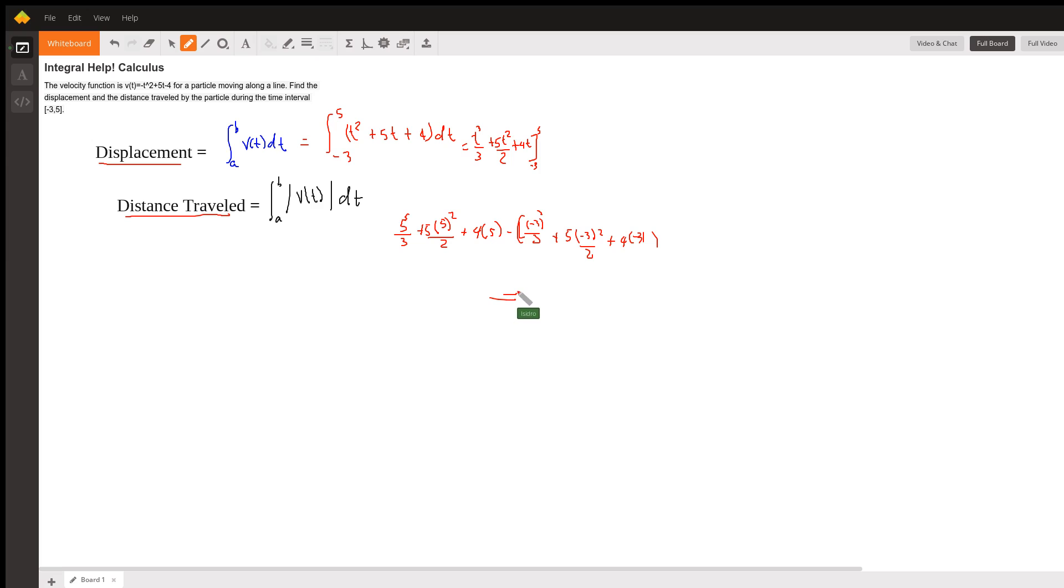The displacement for that particle will be the total displacement, which equals 125 over 3, or 35 divided by 3 plus 125 divided by 2.